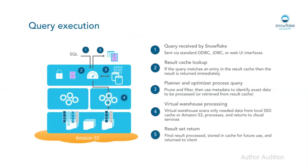Data is stored on Amazon S3. When a user submits a query through JDBC, ODBC, or any UI interface, Snowflake first searches for cached results in the cloud service layer — it maintains cache results for 24 hours along with metadata. If cache results are found, they are returned immediately. If not, the query is submitted to warehouses — compute instances with CPU, memory, and space — which process the query and retrieve data from S3 to return results to the user.